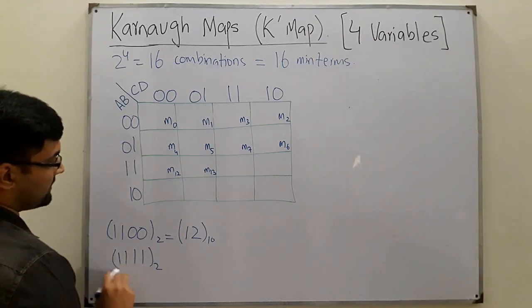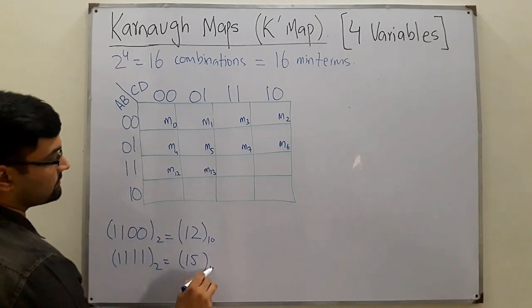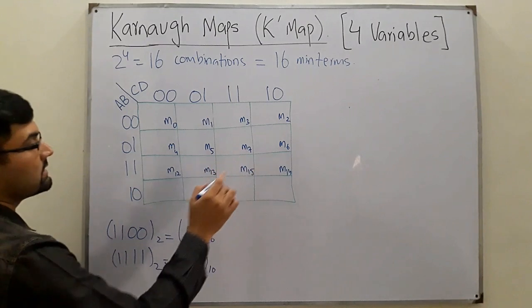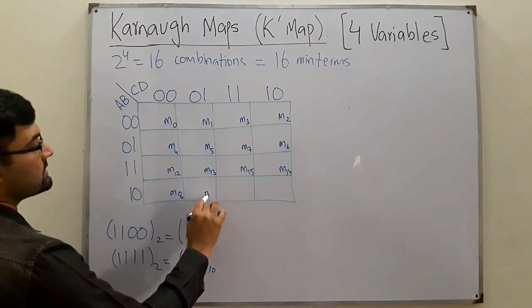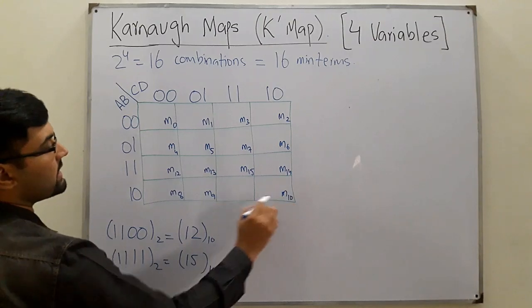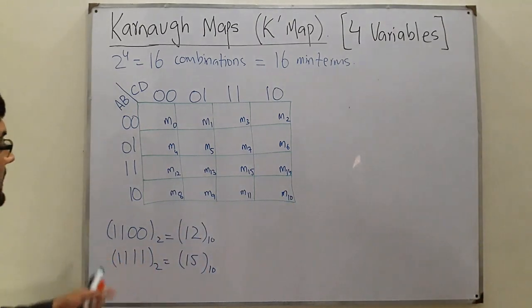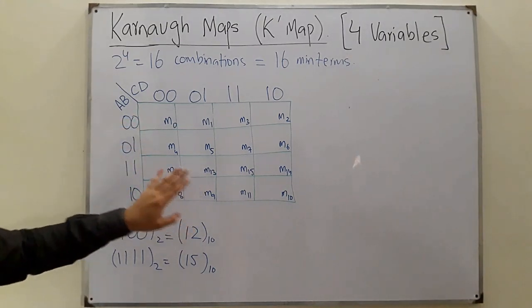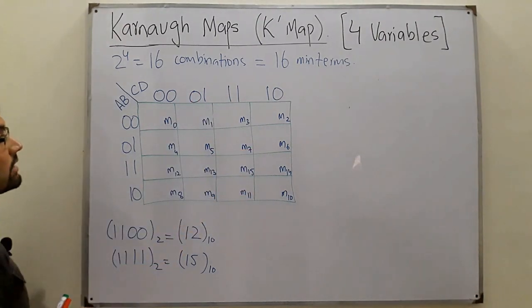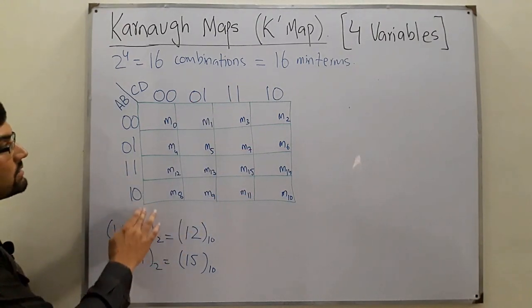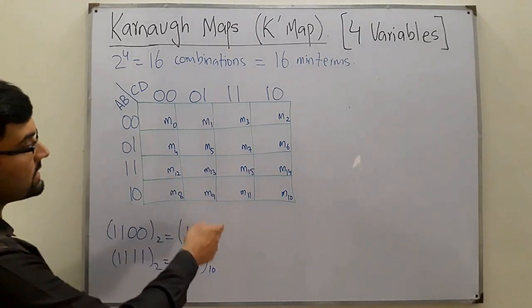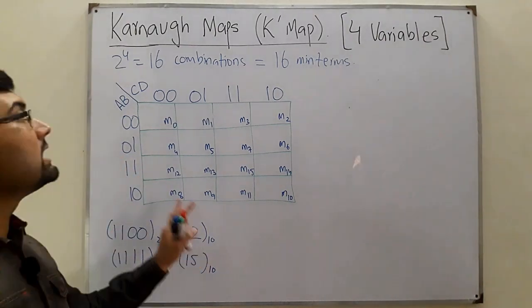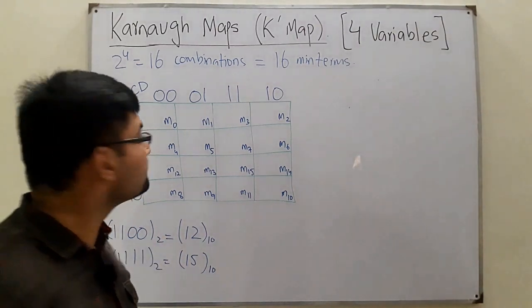Continuing: 1111 in binary is 15, so that cell is m15; the next is m14. Then m8, m9, m10, and m11. You can confirm by converting: 1100 is 12, 1101 is 13, 1111 is 15, 1110 is 14, 1000 is 8, 1001 is 9, 1011 is 11, 1010 is 10. This is the complete four-variable K-map.